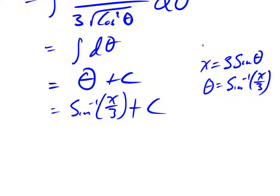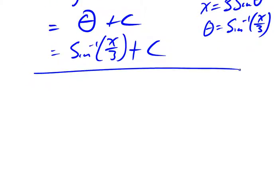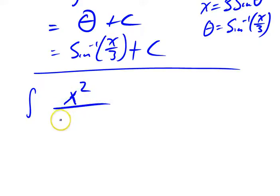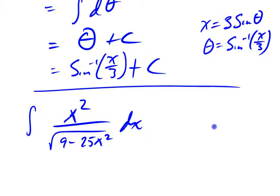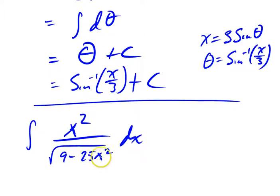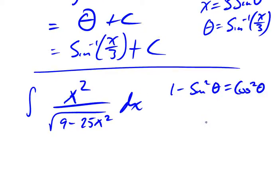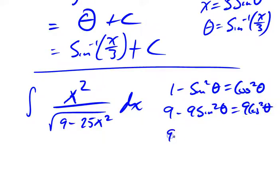I want to do another one that's got a few more numbers in it. How about the integral of x squared over the square root of 9 minus 25 x squared dx? Now I've got numbers all over the place here. The one I've got to focus on is the 9. This is very similar to the last one — that was 9 minus x squared, this is now 9 minus 25 x squared. But it's a constant minus something squared, so I'm thinking in terms of 1 minus sine squared theta equals cosine squared theta.